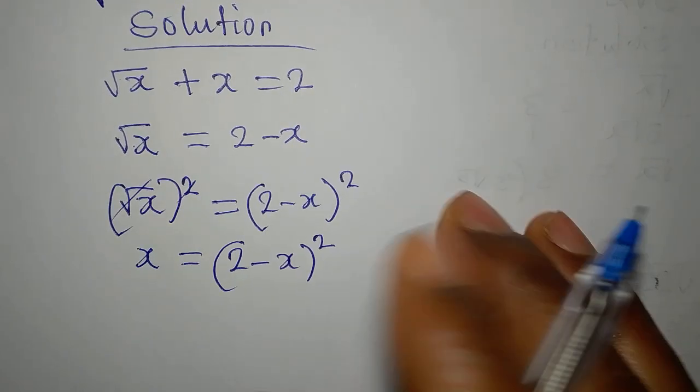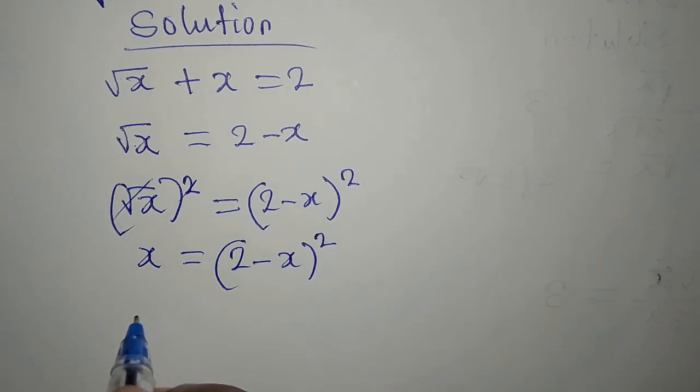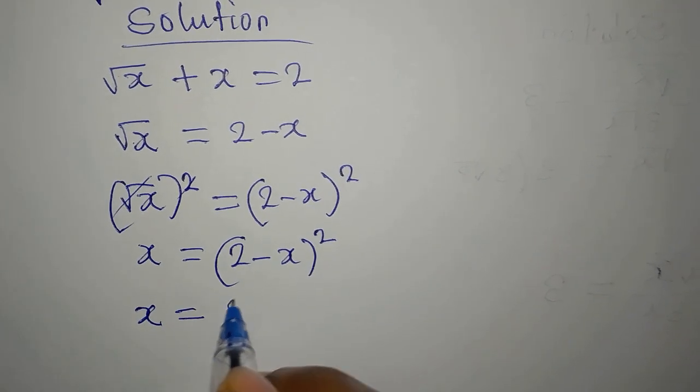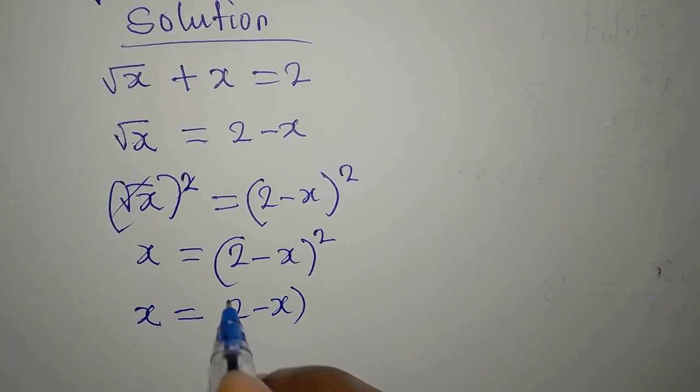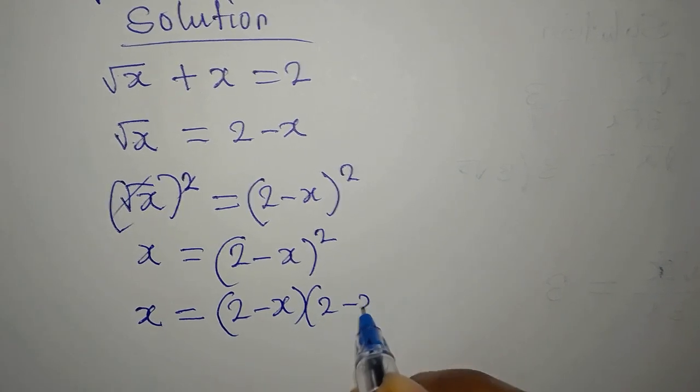So what I will do now is to write this in two places. Our x will be equal to 2 minus x into 2 minus x. This is called expansion.